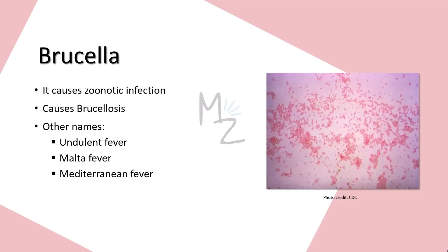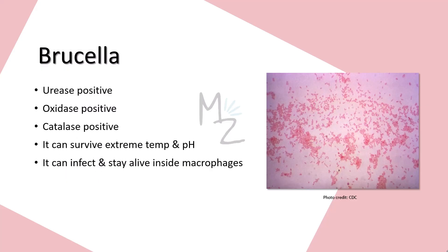From this video onwards we'll be discussing gram-negative rods related to animal sources that are responsible for causing zoonotic infections — infections transmitted from animals to humans. Brucella causes zoonotic infections, and the disease it causes is termed brucellosis, also known as undulant fever, Malta fever, or Mediterranean fever. Brucella is urease, oxidase, and catalase positive. It can survive extreme temperatures and pH, and it can infect and stay alive inside human macrophages.